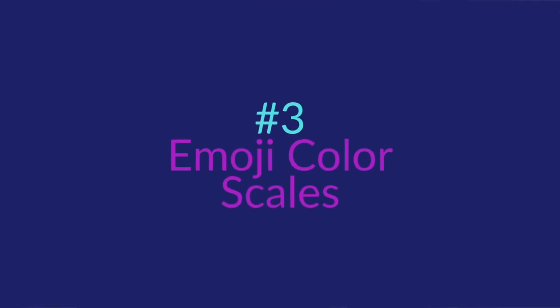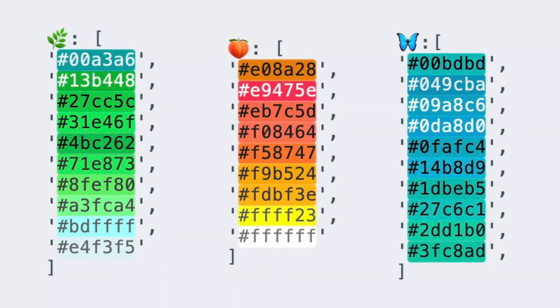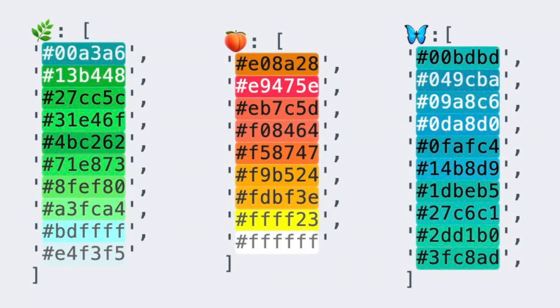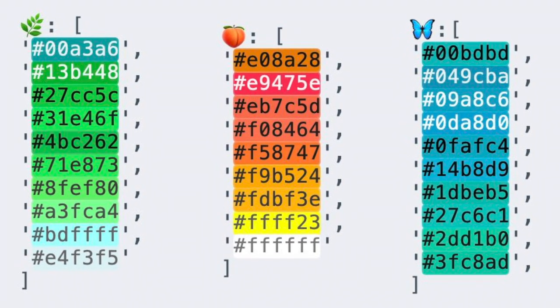Number three. GPT-3 is able to generate color scales. This one actually blew my mind when I saw it. Imagine that GPT-3 was fed with some existing color scales and then given as a prompt a hue name or an emoji, the one that you can see on the picture. And based on this, it was able to break it down into a color scale that was highly accurate.